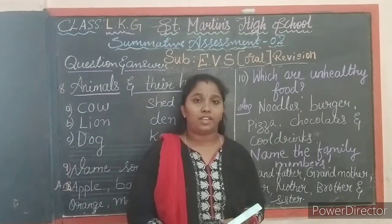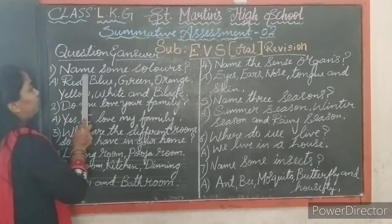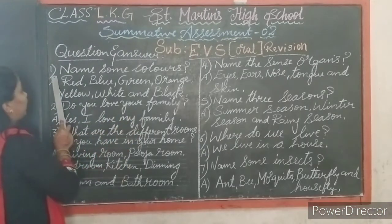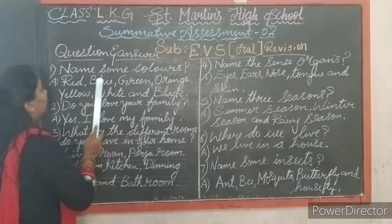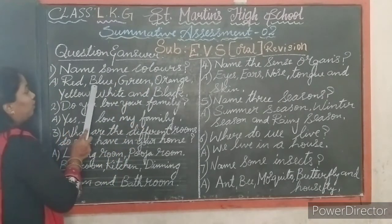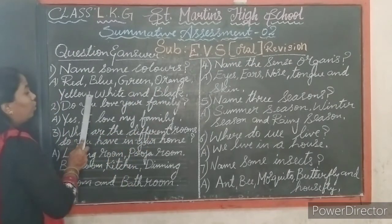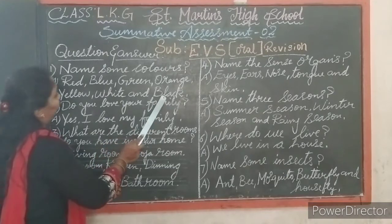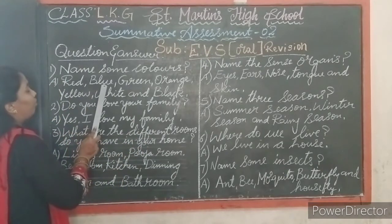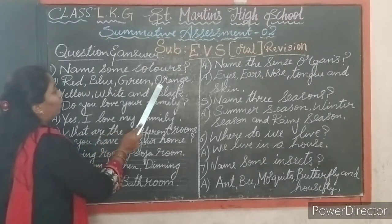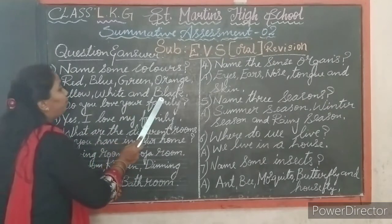Shall we say once again all the question answers. The first question: name some colors. Answer — red, blue, green, orange, yellow, white and black. Shall we say once again children? Red, blue, green, orange, yellow, white and black.